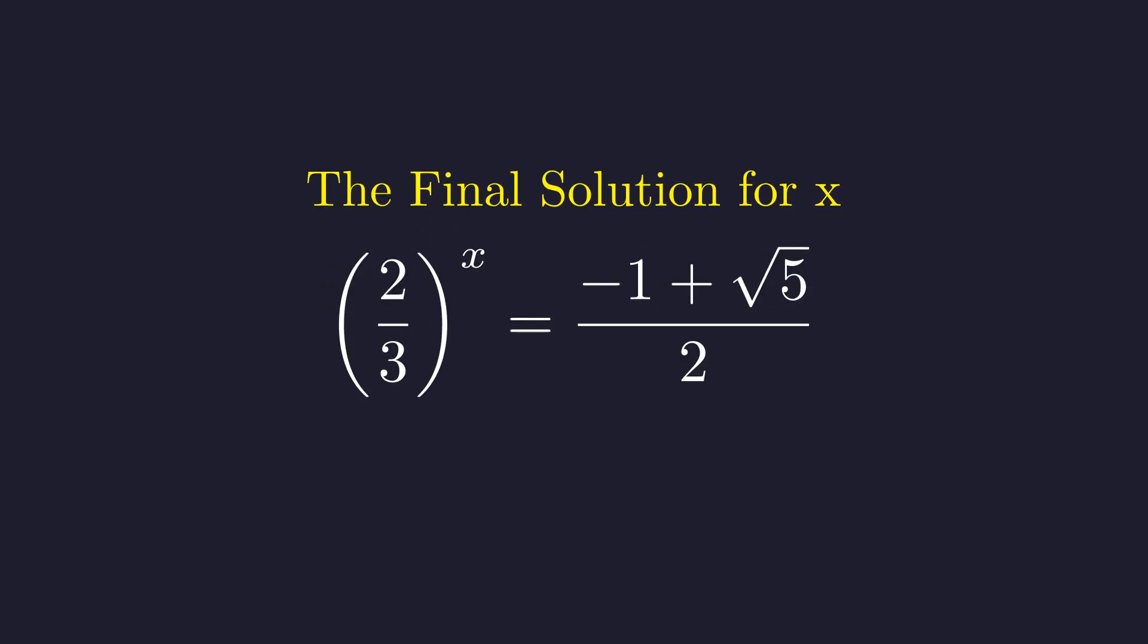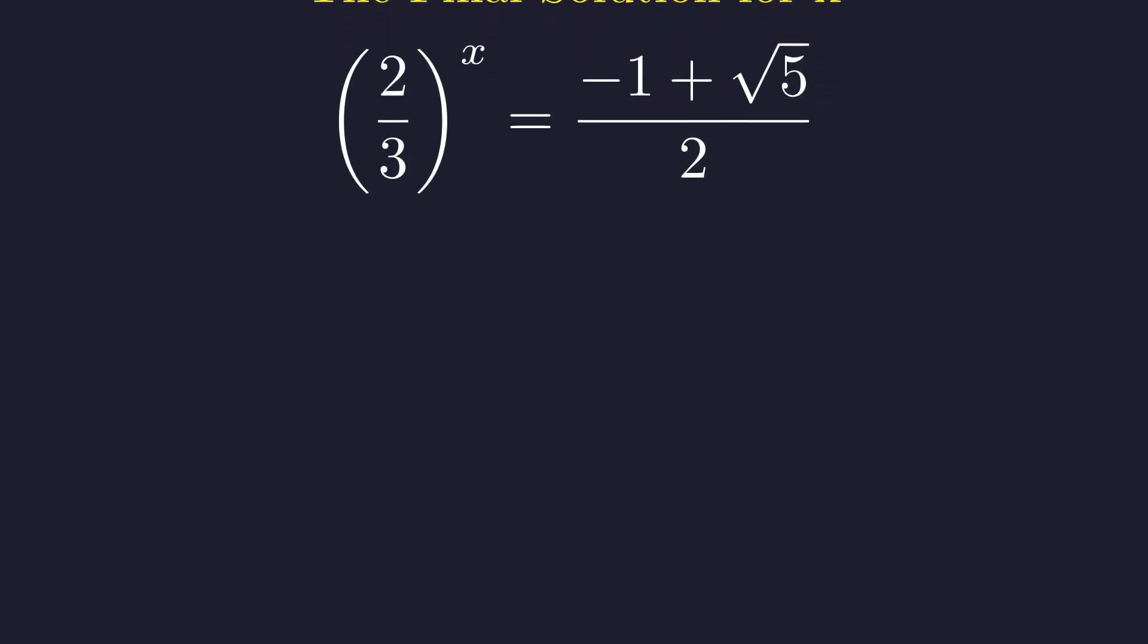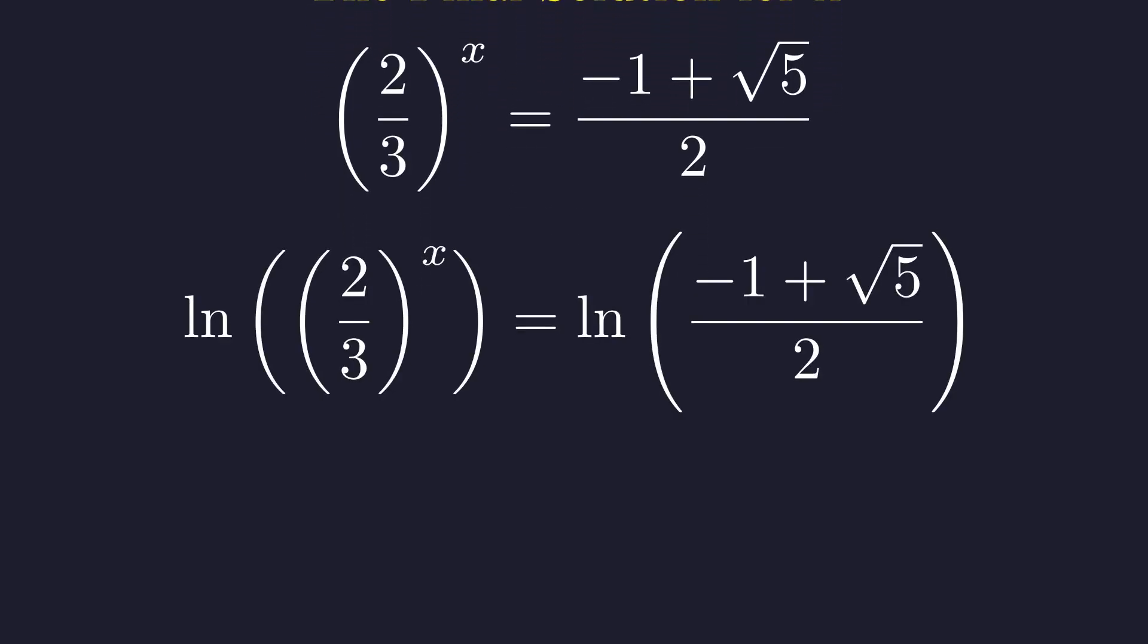We need to solve this equation for x. Remember, we've established that the right side is approximately 0.618, which is a positive number, so our equation is valid. To isolate x in the exponent, we take the natural logarithm of both sides. This is valid since both sides are positive.